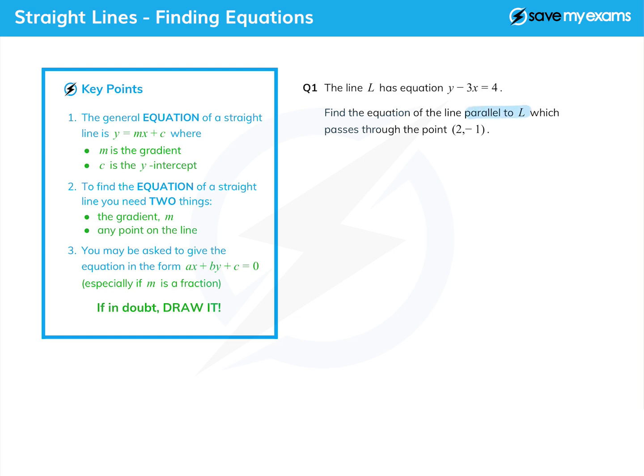Remember that parallel means it has the same gradient. We're also given a point which our new line passes through. Thinking about what we need to find, we know a point on the line, so we just need to find the gradient m, and it will be the same as the gradient of line l.